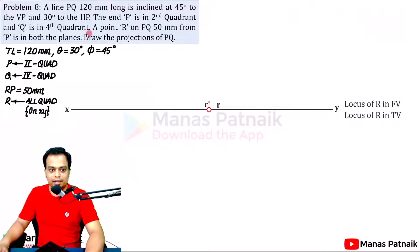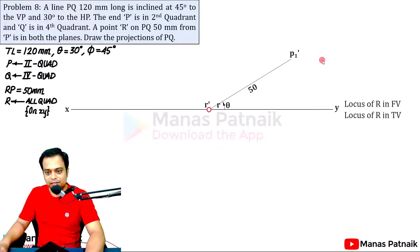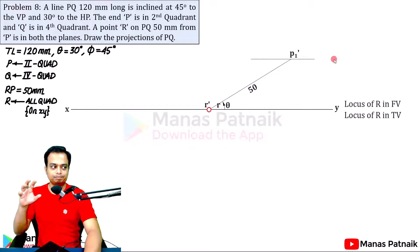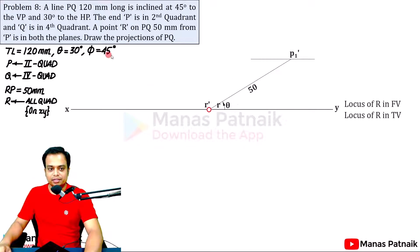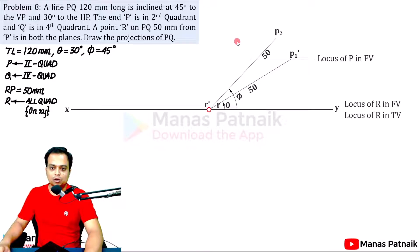Starting with segment RP in the second quadrant: 30 degrees with HP, length 50 millimeters. Draw 50 mm at theta equals 30 degrees — this gives P1 dash, which is the locus of P in the front view. Then make angle phi equals 45 degrees and incline a 50 mm line — this gives the locus of P in the top view.